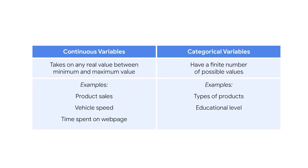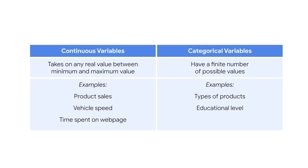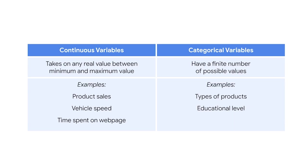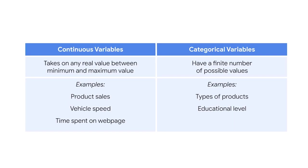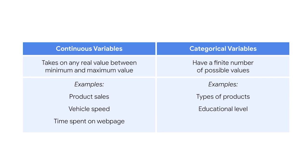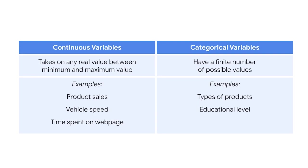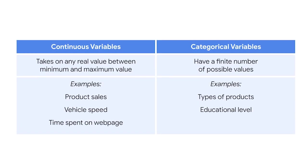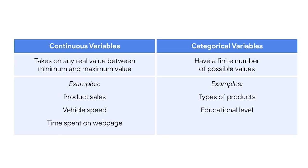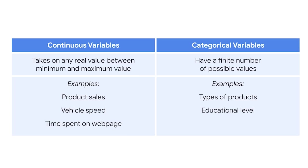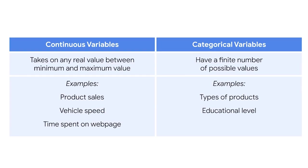As a reminder, continuous variables are variables that can take on any real value between its minimum and maximum value. For example, product sales, vehicle speed, and time spent on a webpage are all continuous variables, whereas types of products and educational level are not — these are categorical. Categorical variables have a finite number of possible values. While linear regression allows us to estimate continuous dependent variables, there are other regression models that let us estimate categorical variables. We'll learn more about those in a later course.